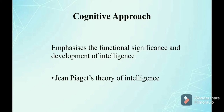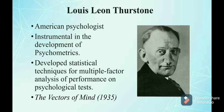Now let's discuss about Thurston's intelligence theory. Louis Leon Thurston was an American psychologist who was instrumental in the development of psychometrics — the science that measures mental functions. He developed statistical techniques for multiple factor analysis of performance on psychological tests. His principal work, 'The Vectors of Mind,' published in 1935, presented Thurston's method of factor analysis to explain correlations between the results in psychological tests.